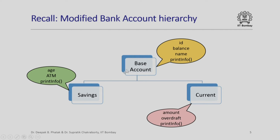The savings class, which is derived from the base class, has two additional data members age and ATM, and it also has a member function named print info. Note that the name of this member function in the savings class is the same as the name of the member function in the base class. Similarly, the current class, which is derived from the base class, has two additional data members amount and overdraft, and it also has a member function print info with the same name as in the base class.